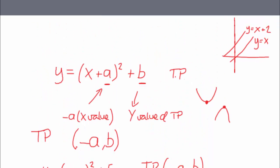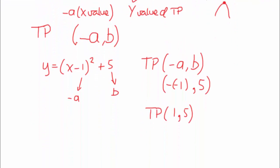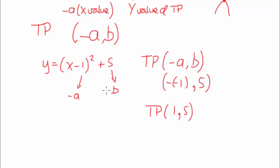Again, given in this form, that value, without changing it, that's a y value. This value, the turning point is minus a. So if there's a minus in front of it, you're talking about a positive x value for your turning point. If there's a plus in front of it, you're talking about a minus.